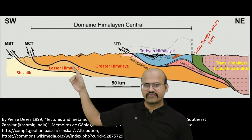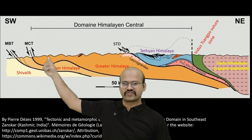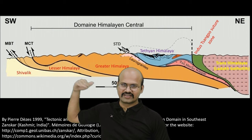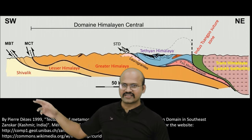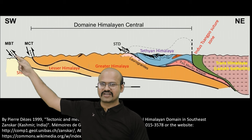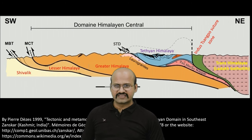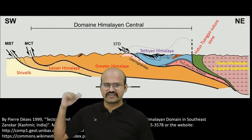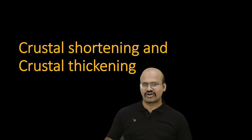Moving further, we can see the Lesser Himalayas and the Greater Himalayas. The Main Central Thrust created the Greater Himalayas — one arrow shows the crust subducting here while another shows this part moving upward. Similarly, at the Sivaliks we have the Main Boundary Thrust, which separates the Sivaliks from the Lesser Himalayas. The compressive force at the Main Boundary Thrust created the Lesser Himalayas, and on the southern direction of the Sivaliks we have the Main Frontal Thrust, which created the Sivaliks.